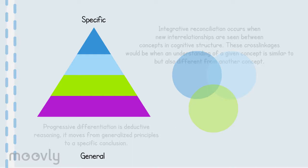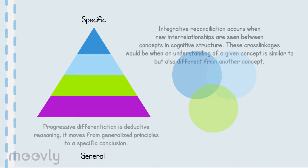The primary idea of advanced organizer theory is that the most important single factor in influencing learning is what the learner already knows. To be effective, advanced organizers must meet two requirements. One, the learner's specific existing relevant conceptual and propositional knowledge must be identified. And two, appropriate organization and sequencing of new knowledge to be learned must be planned in such a way as to optimize the learner's ability to relate the new knowledge to the concepts and propositions already held.